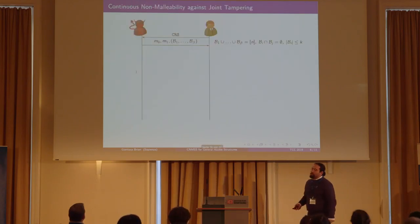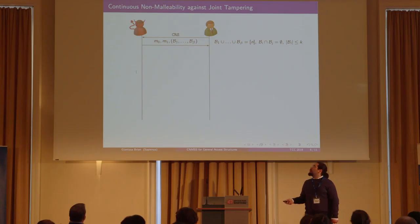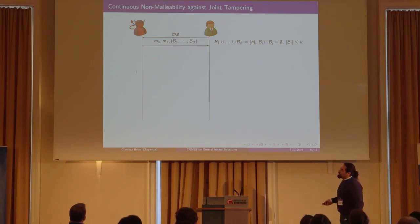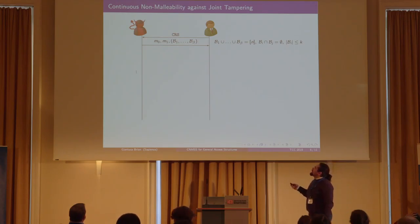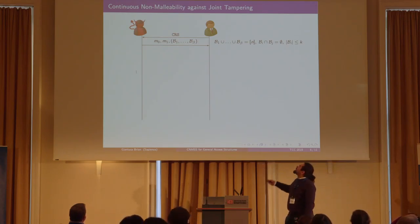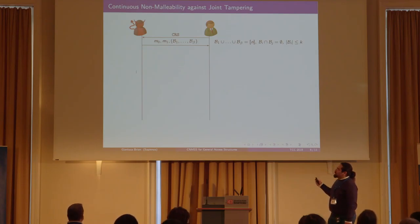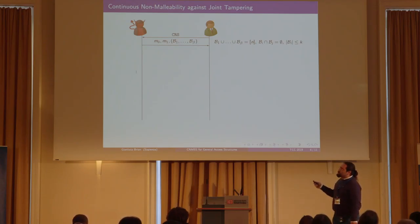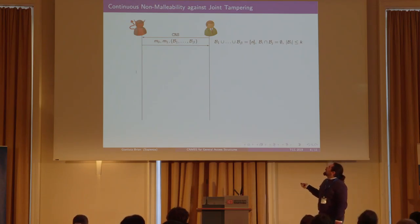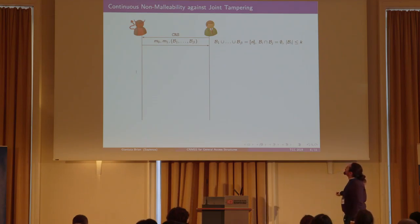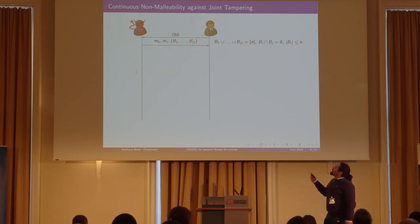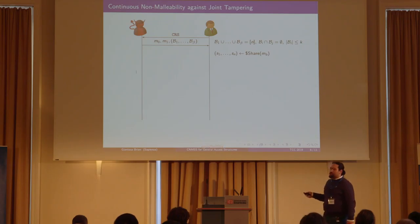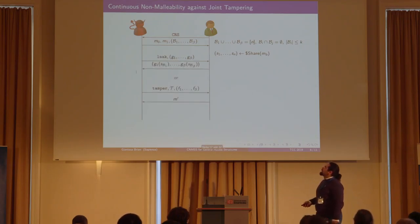We adopt the game-based model to give our definitions and proofs. In the continuous non-malleability definition, we have the attacker on the right and the challenger on the left. The challenger generates and outputs the common reference string, and the attacker chooses two messages M0 and M1, along with a K-partitioning of disjoint and non-overlapping subsets of the parties. Upon receiving this, the challenger computes the secret sharing of either M0 or M1, and then the attacker can start performing queries.